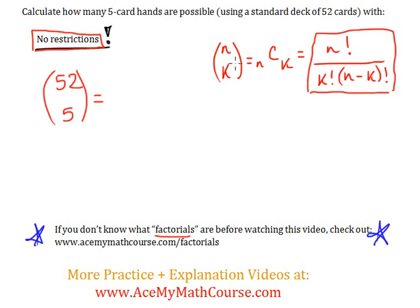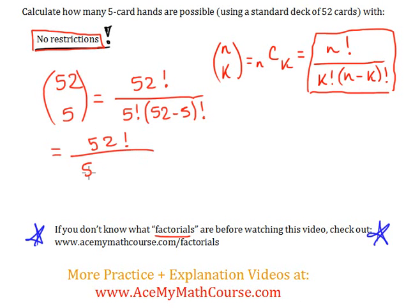We're going to have n factorial, and n is 52, over 5 factorial times 52 minus 5 factorial. So you get 52 factorial over 5 factorial times 47 factorial.